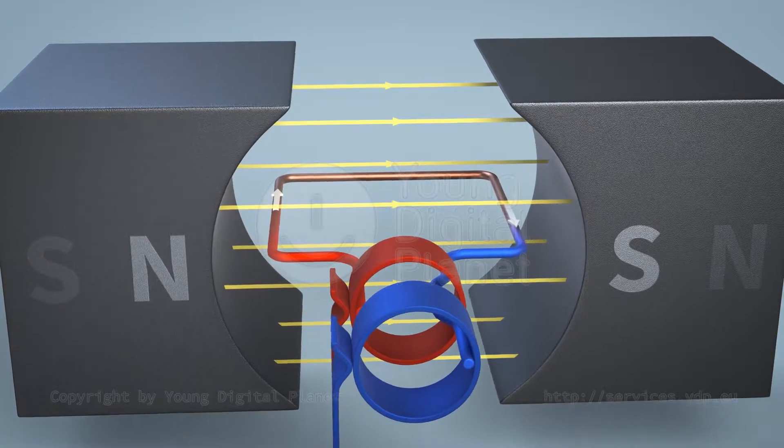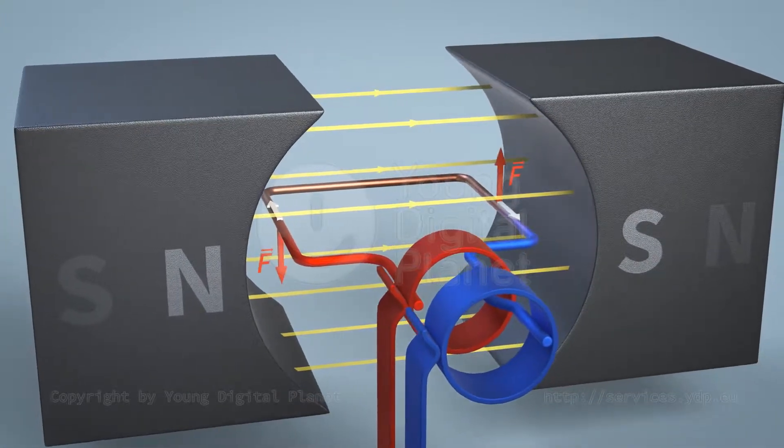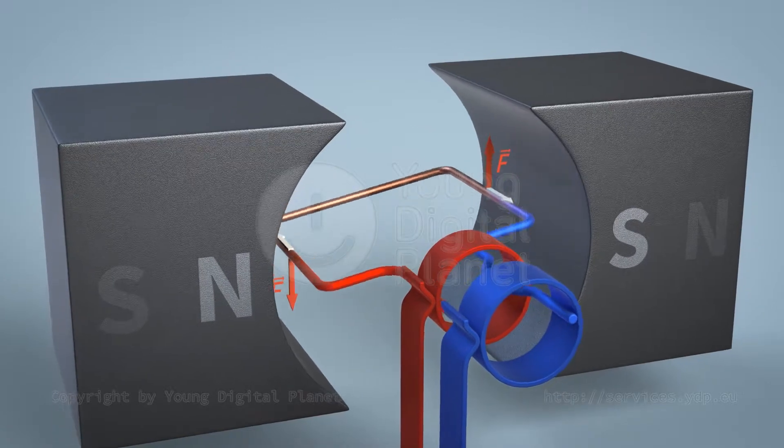The action of the magnet on the conductor, where an electric current flows, generates forces which make the frame begin to turn around.